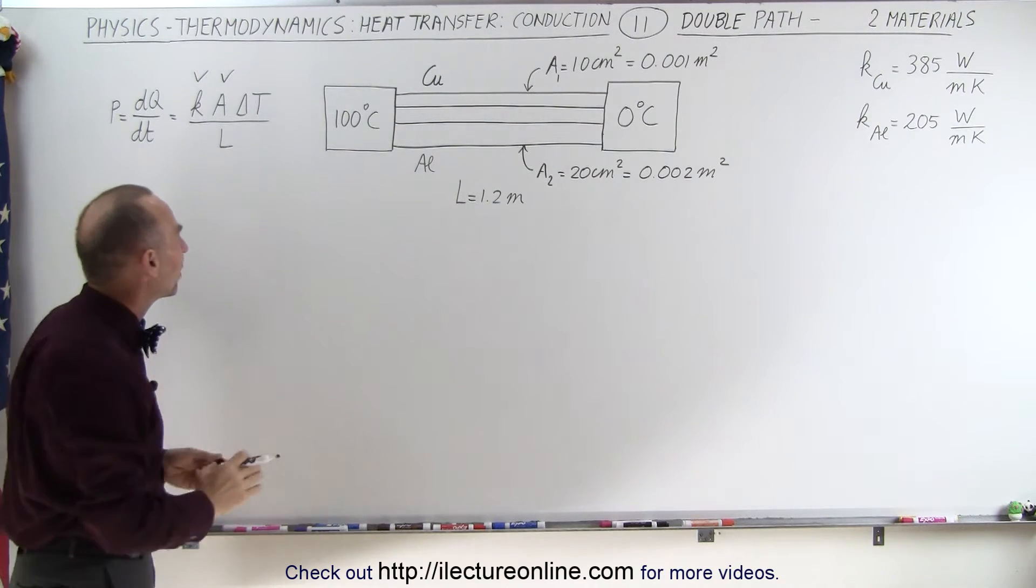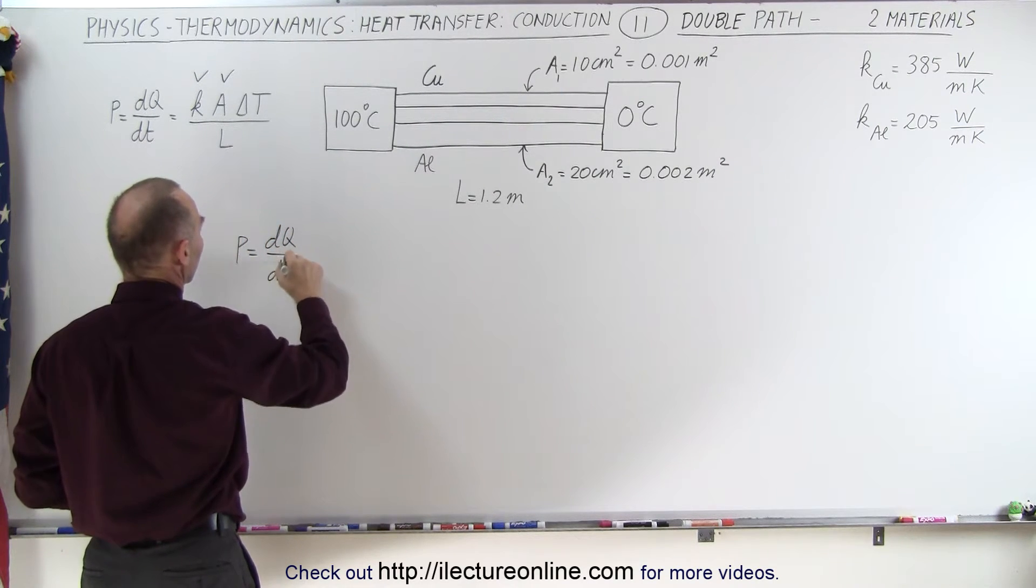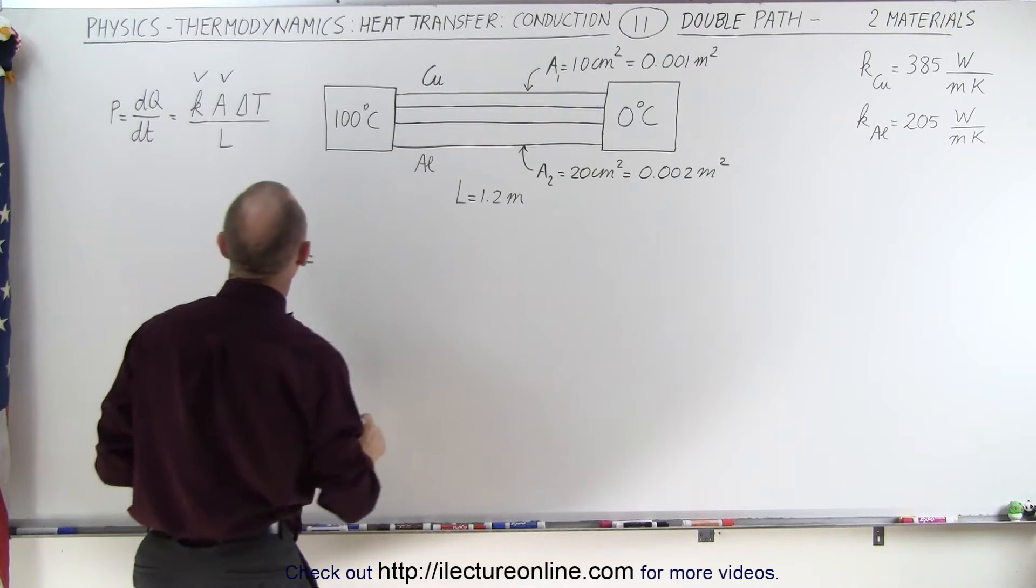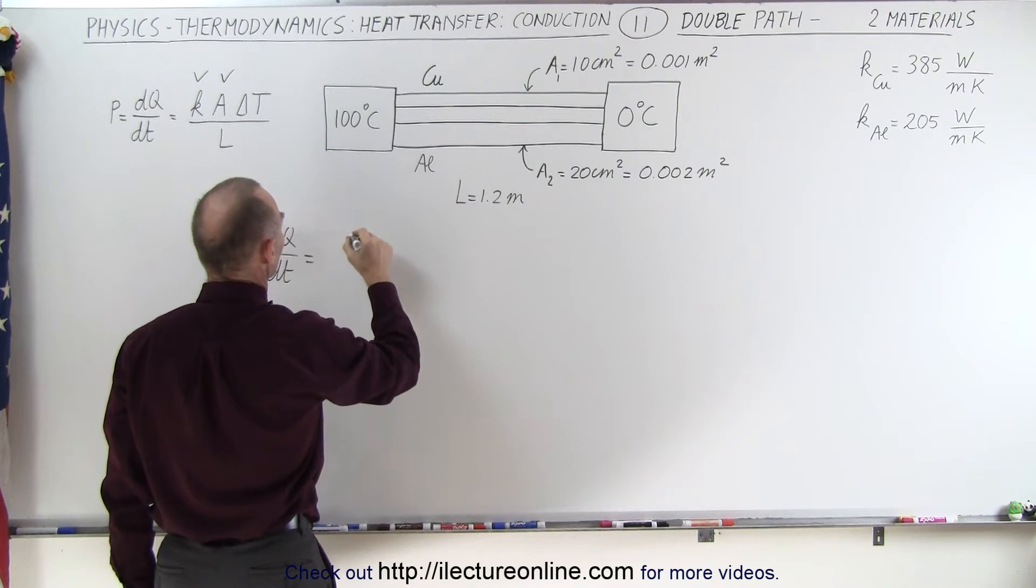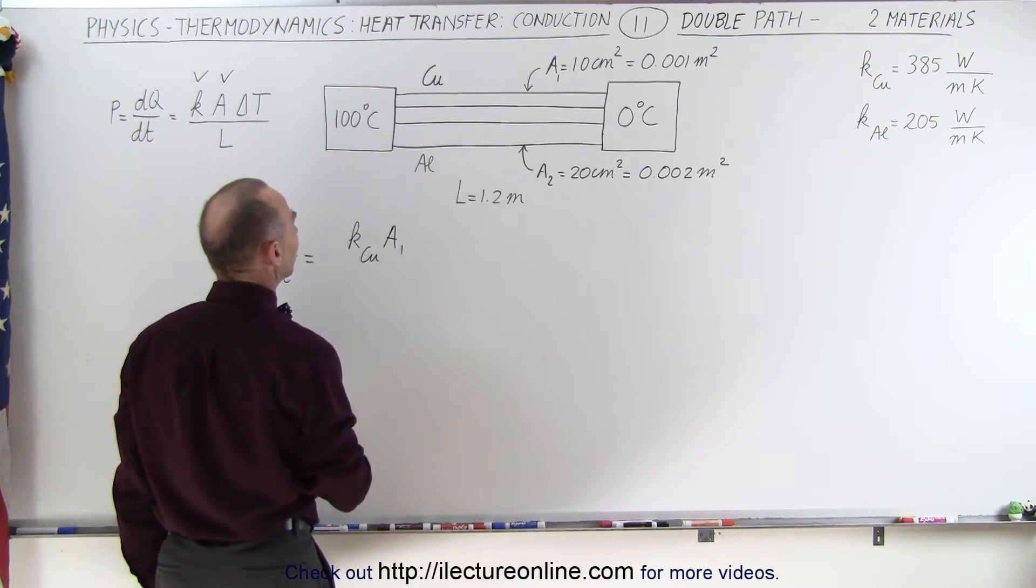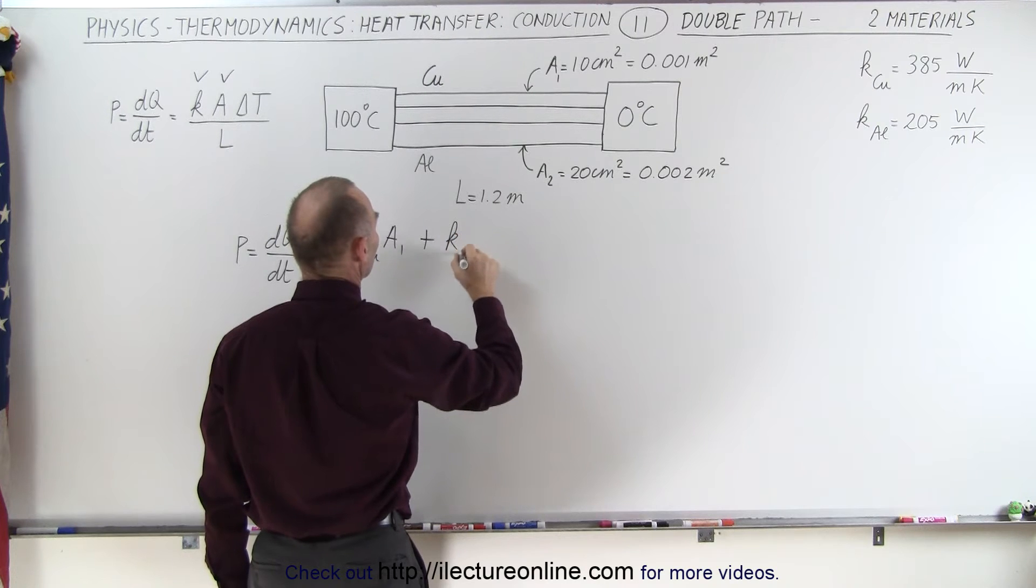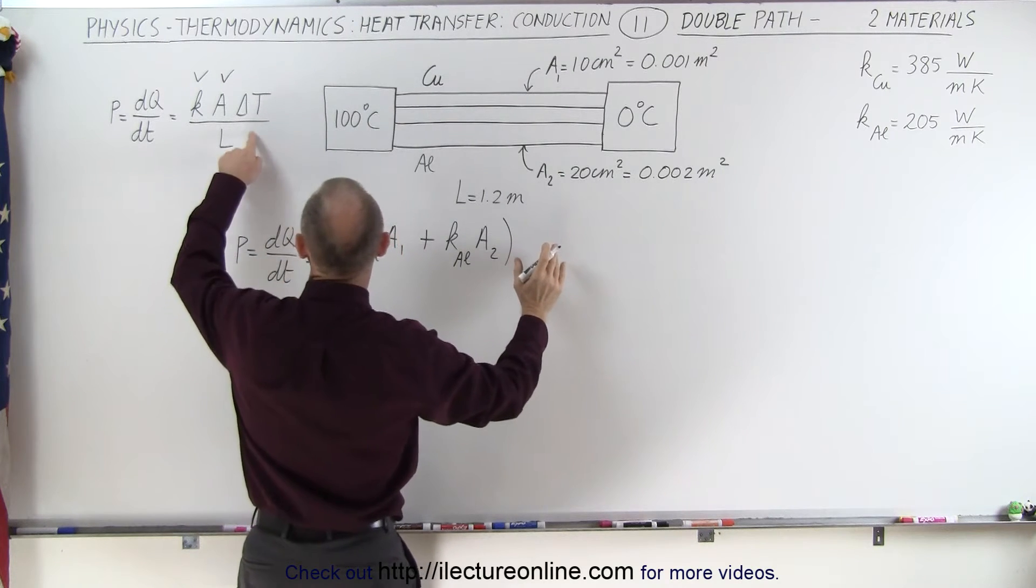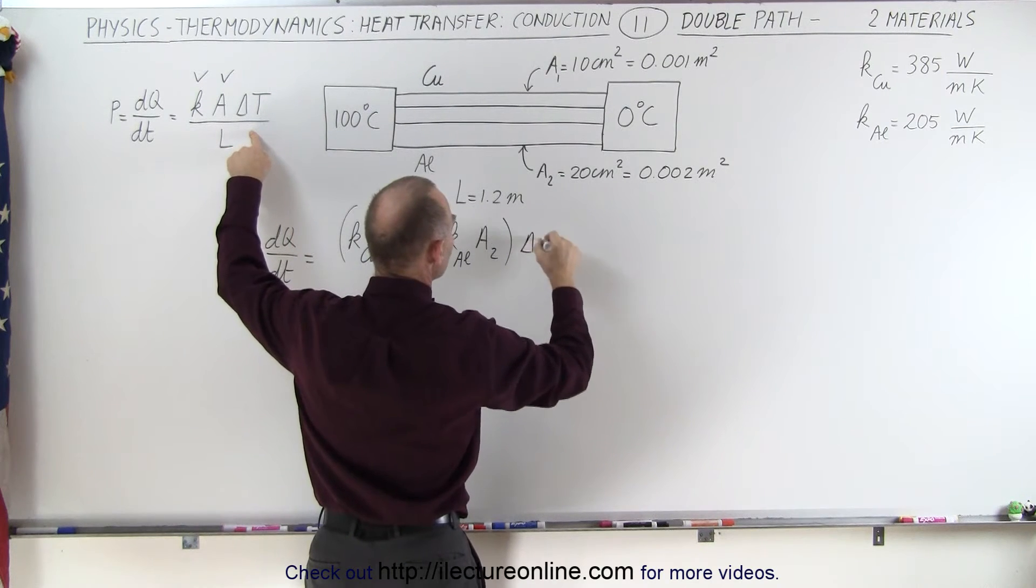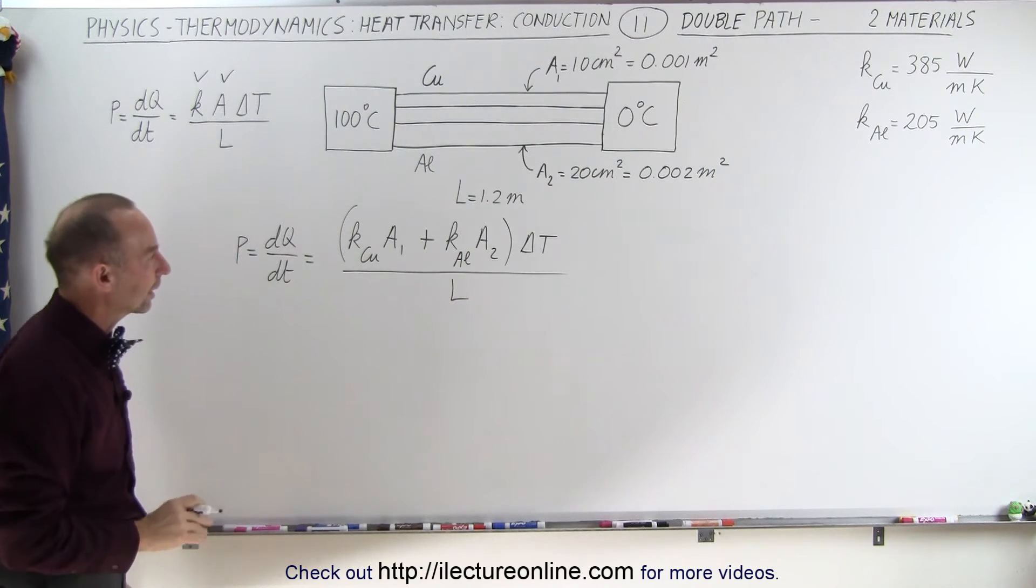So the way you're going to write the equation now is as follows. The amount of power dissipated, which is equal to dQ/dt, is equal to - we need two separate accounting for the conductivity constant and the cross-sectional area. So we're going to take the conductivity constant of copper times the cross-sectional area of that particular bar, plus the conductivity constant for aluminum times the cross-sectional area for it, and then multiply it times everything else that's now common, which is the delta T, and divided by what's common, the length L. And so that's what the equation is going to look like now.